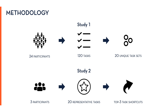We then conducted a second study with three participants to evaluate Savant's performance. We bootstrapped Savant with the Ricoh dataset and computed the top three task shortcuts for each representative task. Participants evaluated whether or not each screen was task-relevant, and we computed top-three precision values for the 20 task sets. The average precision over all task sets was 70.1%.